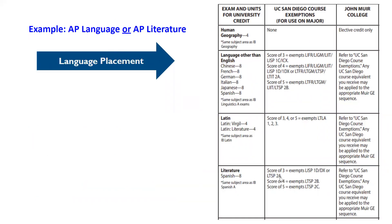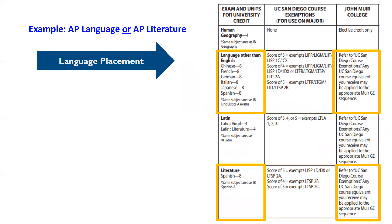Using AP language or AP literature towards the Muir language GE area is another popular choice. This example looks at how you can determine your placement in Spanish from AP credit. For Muir GEs, you can use either exam to count as two courses towards a Muir language GE theme. To complete a GE theme, you must take one more language course that shows progression in that same language. The course exemption column lets you know your placement so you can finish that last course. If you happen to have taken both exams, you will receive credit for each exam and then your language placement will be the highest placement that was granted to you.